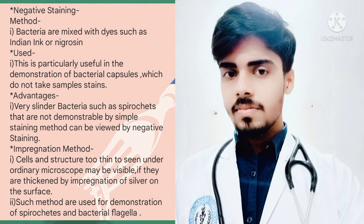Now we will talk about the third method, the impregnation method. In this method, structures too thin to be seen under the ordinary microscope may be visible only if they are thickened by impregnation of silver on the surface. The advantage of the impregnation method is that it is used for the demonstration of spirochetes and bacterial flagella.